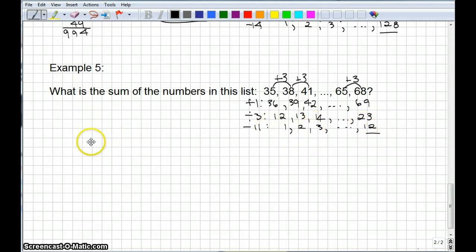So the sum of the numbers is 35, the first number, plus 68, the last number, times 12 all over 2. And when we calculate that out, we get 103 times 6, which is 618. There you go.